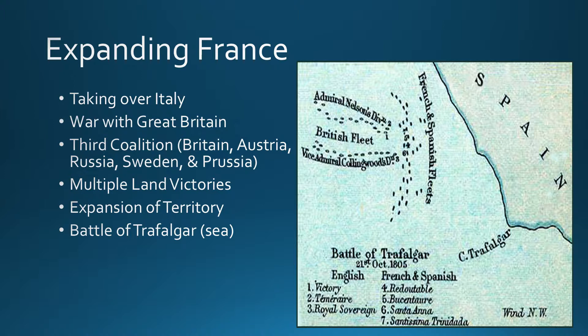The one place Napoleon has trouble taking over is Britain. He goes to battle with Britain in what is known as the Battle of Trafalgar — a notorious sea battle throughout world history. This one loss for Napoleon is more significant than all his land victories combined. Napoleon loses to Britain, and this stops him. The fact that the one place he couldn't take over was Britain leaves him in a bad position and relatively upset.